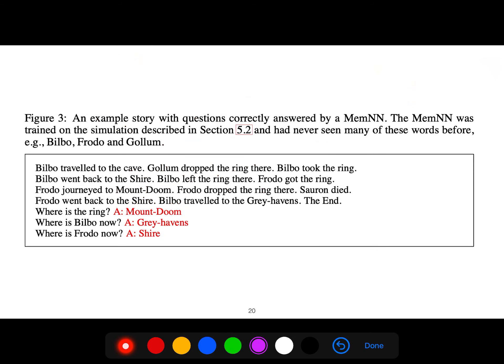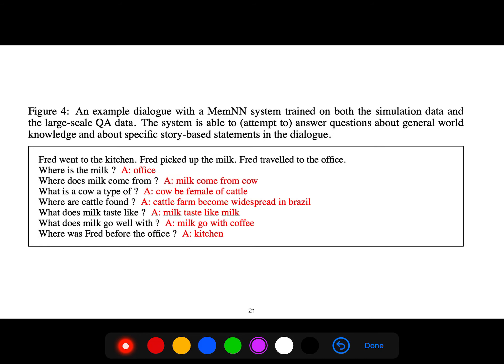This is another example. Bilbo traveled to the cave, Gollum dropped the ring there, Bilbo took the ring. Where is the ring? So it picks the relevant memories and then combines it with the query and gives the response.